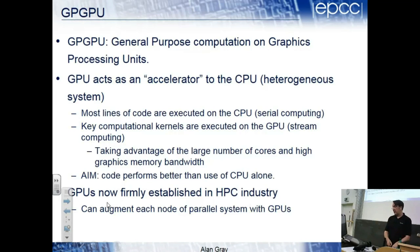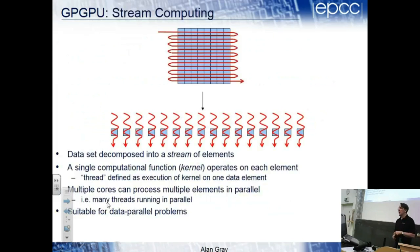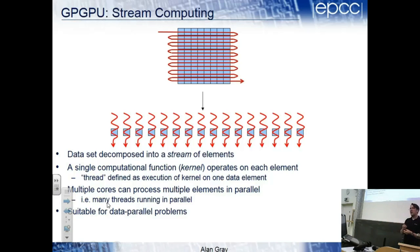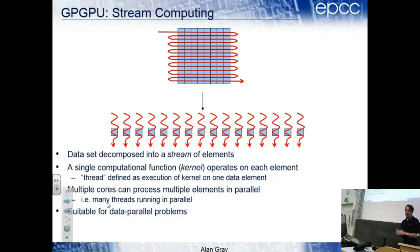GPUs are now firmly established in HPC. The model involves writing a computational function - a kernel - which operates on a single element. These are called threads, analogous to but not the same as normal threads on Linux. In the traffic model, you'd write a function that updates one cell - that's your fundamental unit of computation, one GPU thread.